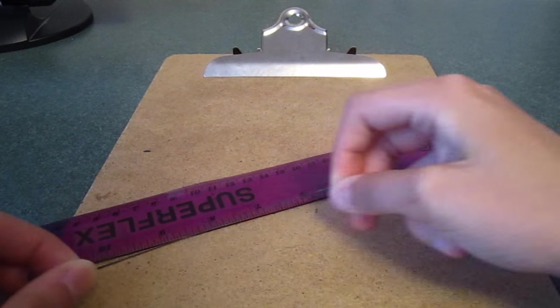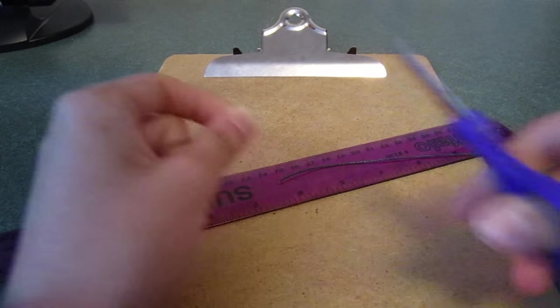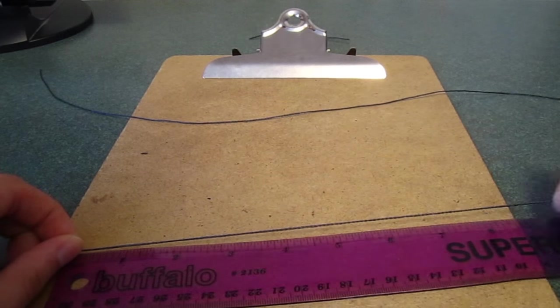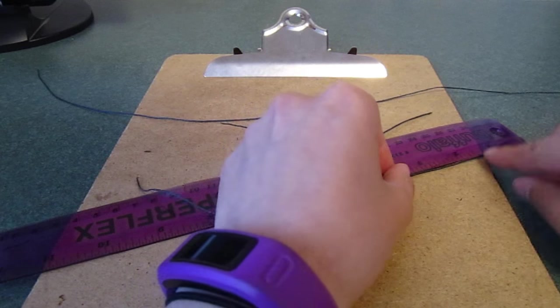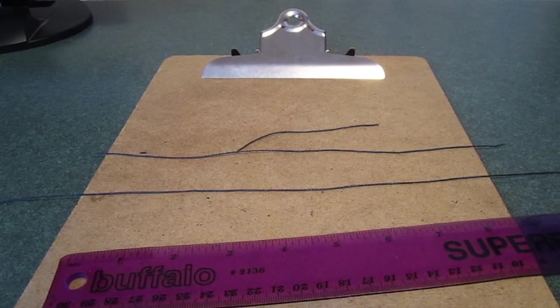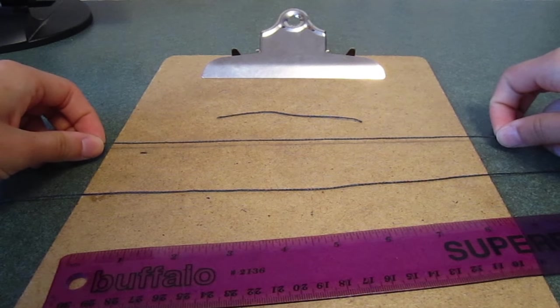To begin, I cut 18 inches of wax coated thread. I then cut another strand 12 inches long and finally a 4 inch strand for the closure. That is all the thread you'll need for this bracelet.